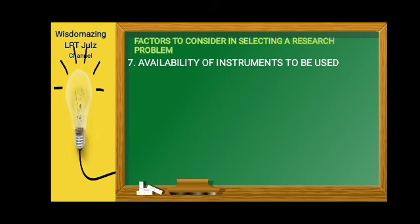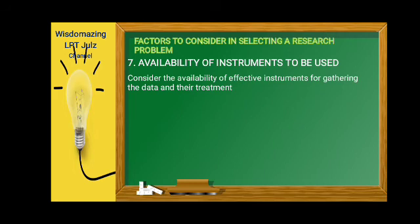So consider the availability of data involved in the study and the methods and techniques to be employed in gathering them. You have to consider the data that you are going to collect. Number seven is the availability of instruments to be used. Sabi natin kanina, availability of data. So before finalizing on your topic, make sure that the data are available. Getting information for your research is very critical to any research. So consider the availability of effective instruments for gathering the data and their instruments as well.